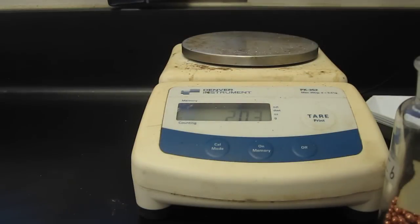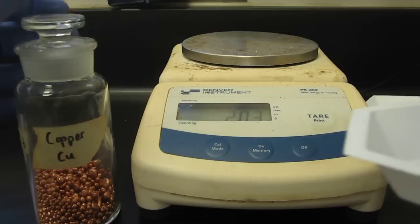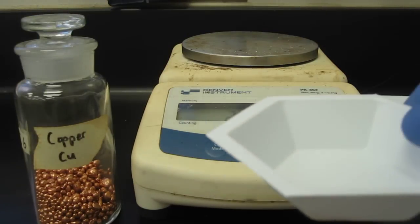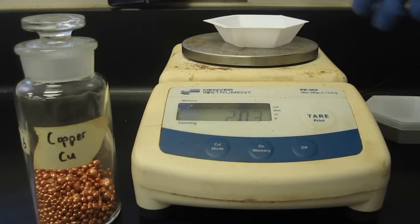so there's 8 pieces or 8 little copper shots in there and that's an exact number. There is exactly 8 of them because I counted them 1, 2, 3, 4, 5. Now we're going to put them on the balance.